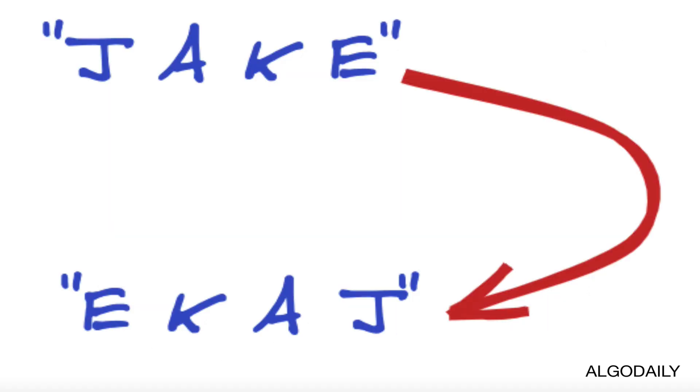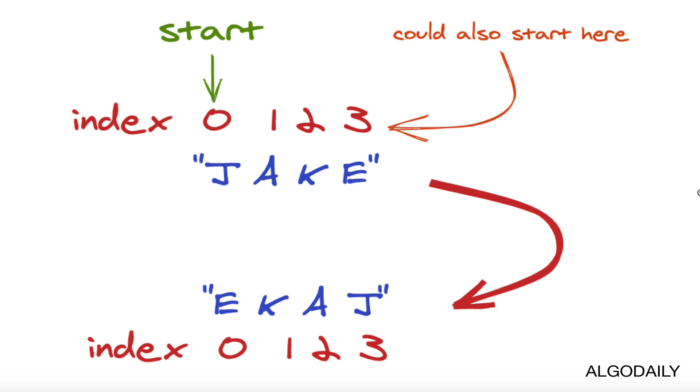Anytime we want to tackle one of these problems, we should always start with a basic example and get our feet wet with what exactly we're trying to do in a programmatic sense. I like to run through a few simple test cases. In this video, there's probably no easier one than just a simple string like Jake, J-A-K-E. This is our input and this is our output, and we want to think of ways to get to this point.